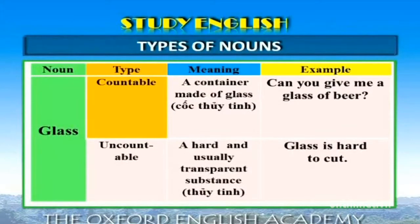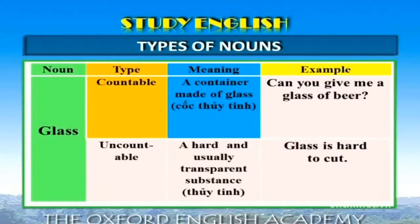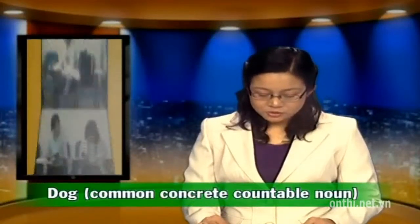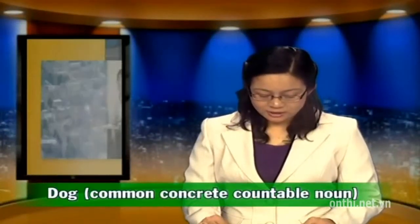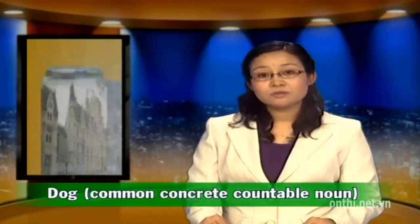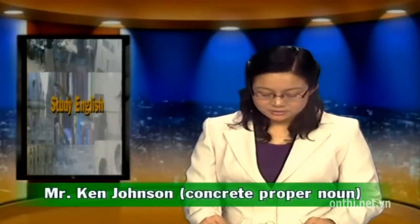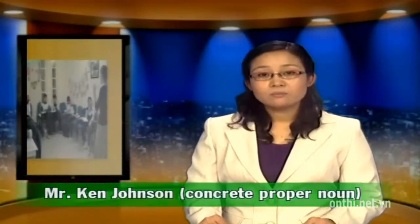Glass là danh từ đếm được khi nó có nghĩa là cốc thủy tinh. Ví dụ: "Can you give me a glass of beer?" Nhưng nó lại là danh từ không đếm được khi nó chỉ chất liệu thủy tinh. Ví dụ: "Glass is hard to cut." Thứ ba, một danh từ có thể đồng thời thuộc về nhiều nhóm trong các nhóm phân loại kể trên. Ví dụ, desk là danh từ chung chỉ sự vật vật chất cụ thể đếm được (common concrete countable noun). Mr. Ken Johnson là danh từ riêng chỉ sự vật vật chất cụ thể (concrete proper noun).